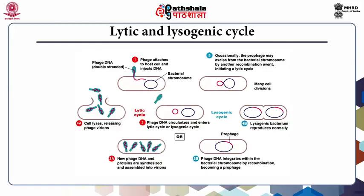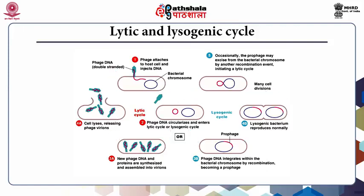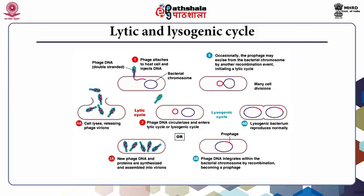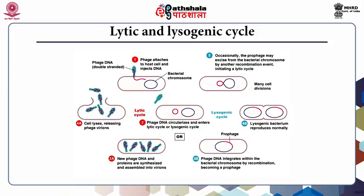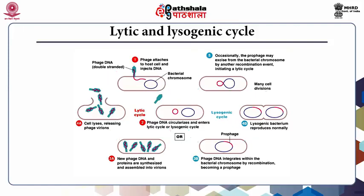This picture shows both the lytic and lysogenic phases of the viral cycle. First, the phage attaches to the host cell and injects its DNA — the bacterial chromosome is visible and the capsid remains outside. Second, the phage DNA circularizes and enters either the lytic cycle or the lysogenic cycle. In the lytic cycle, new phage DNA and proteins are synthesized and assembled, then cell lysis releases more viral particles. In the lysogenic phase, the DNA integrates with the host genome forming a prophage, and as the host genome multiplies, so does the viral genome.